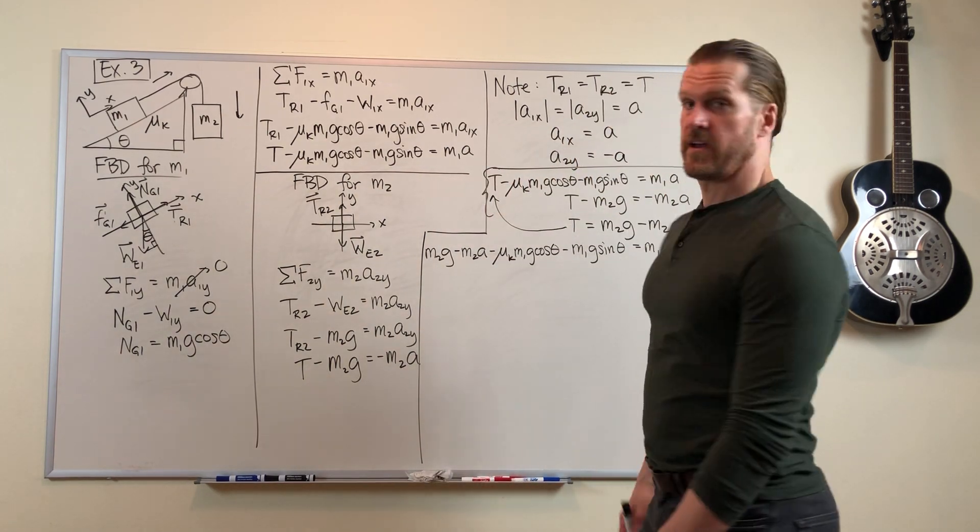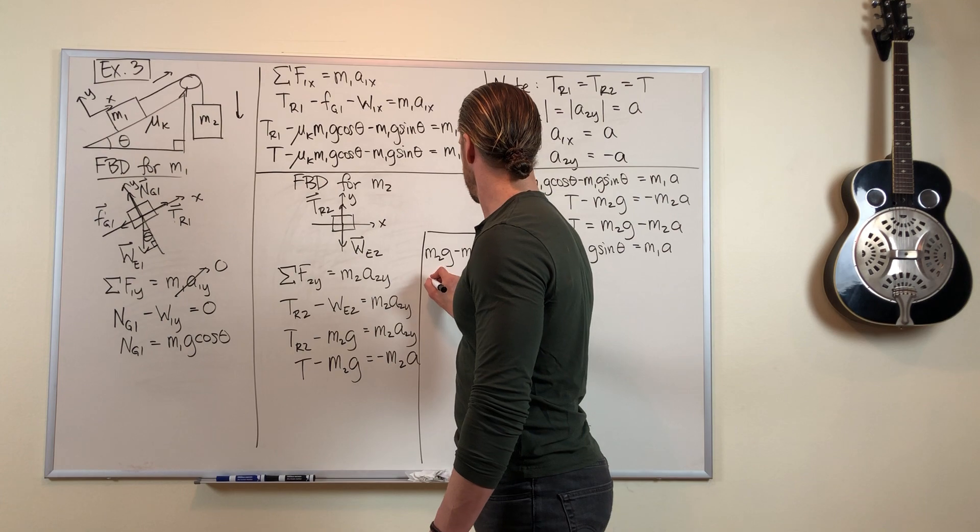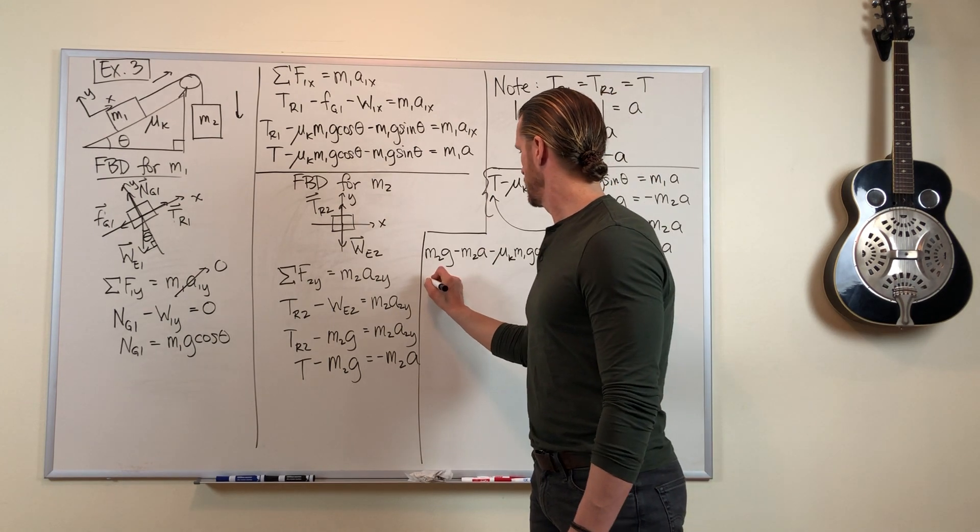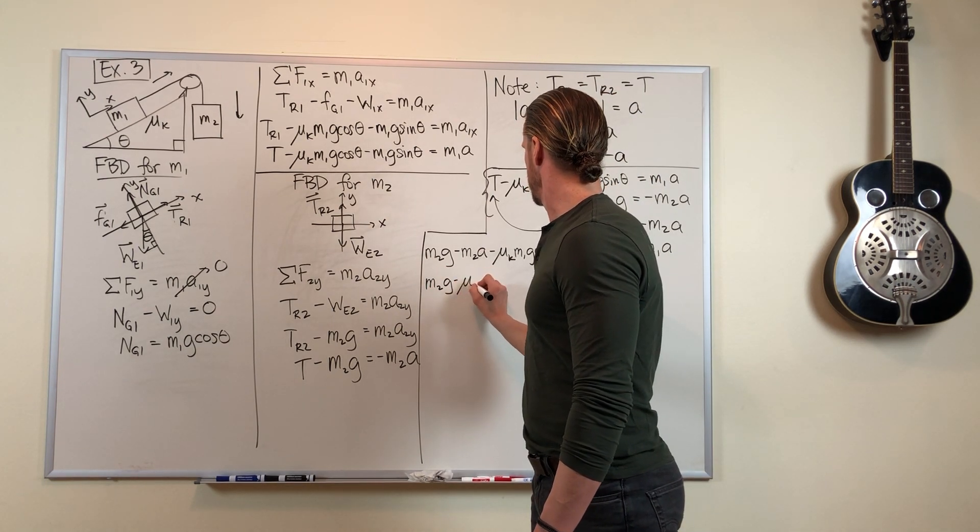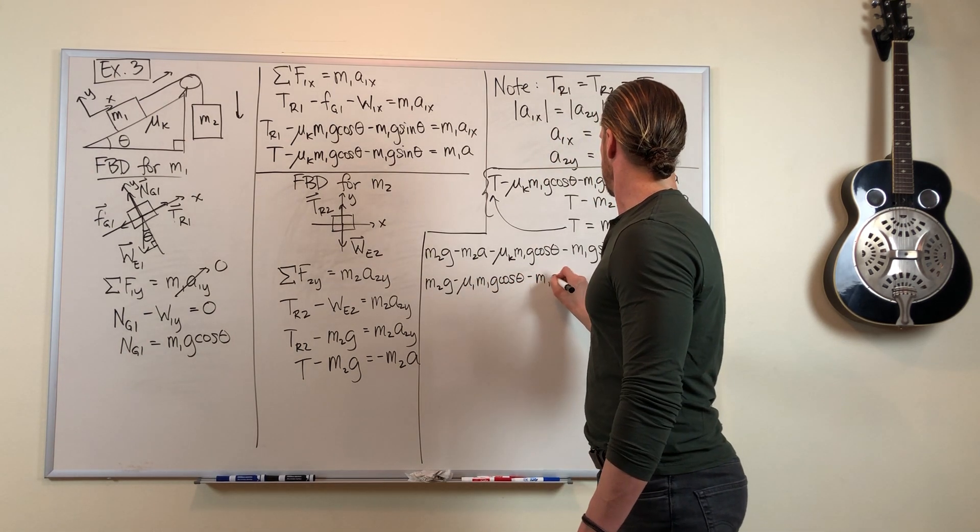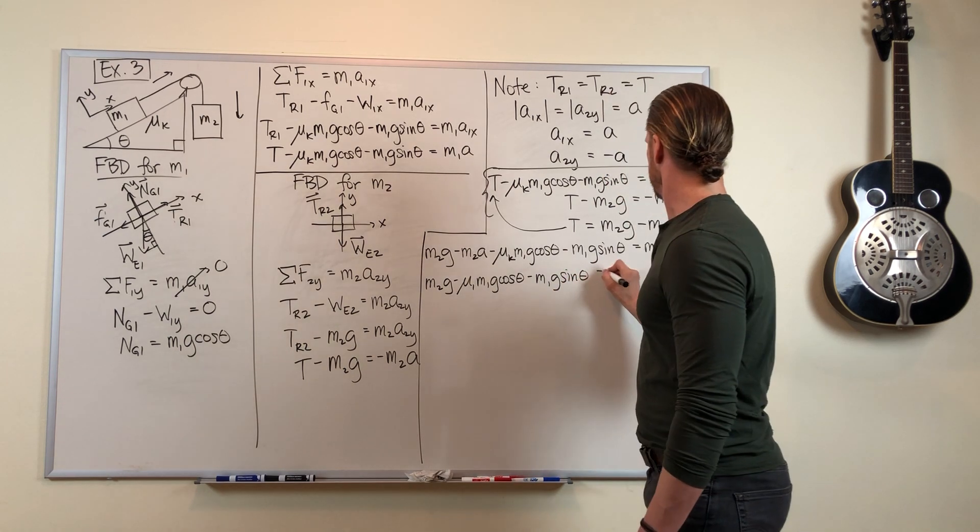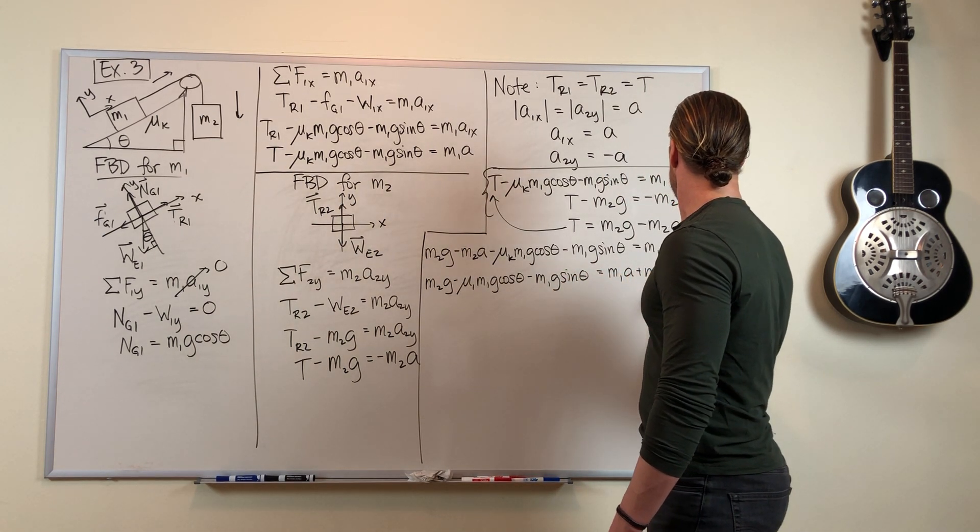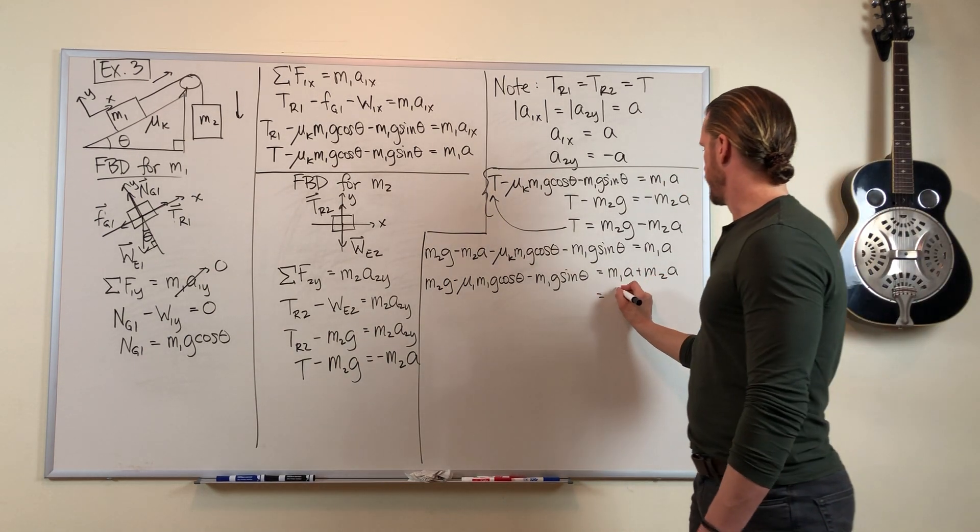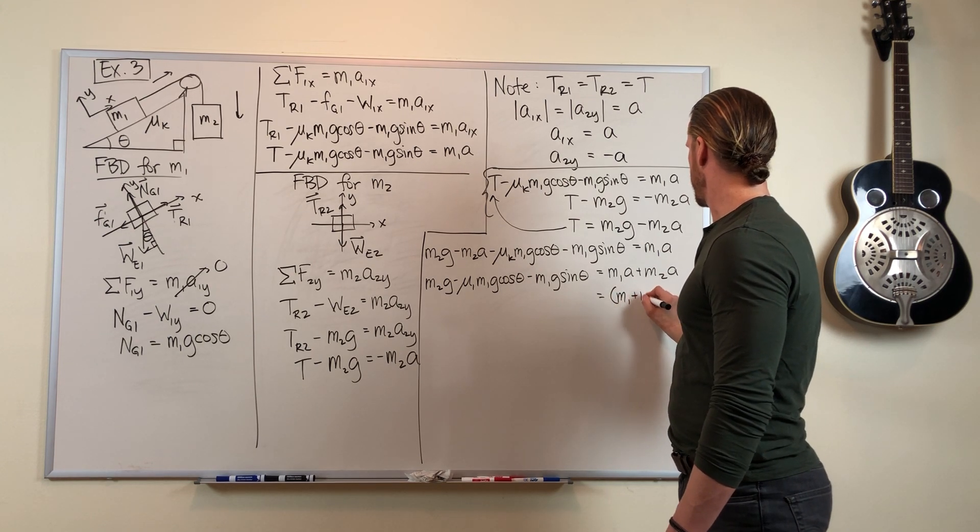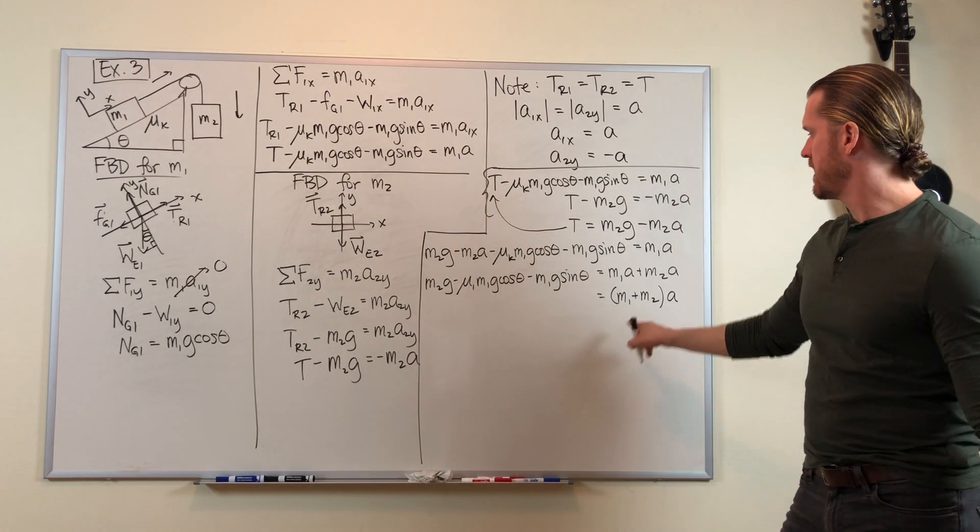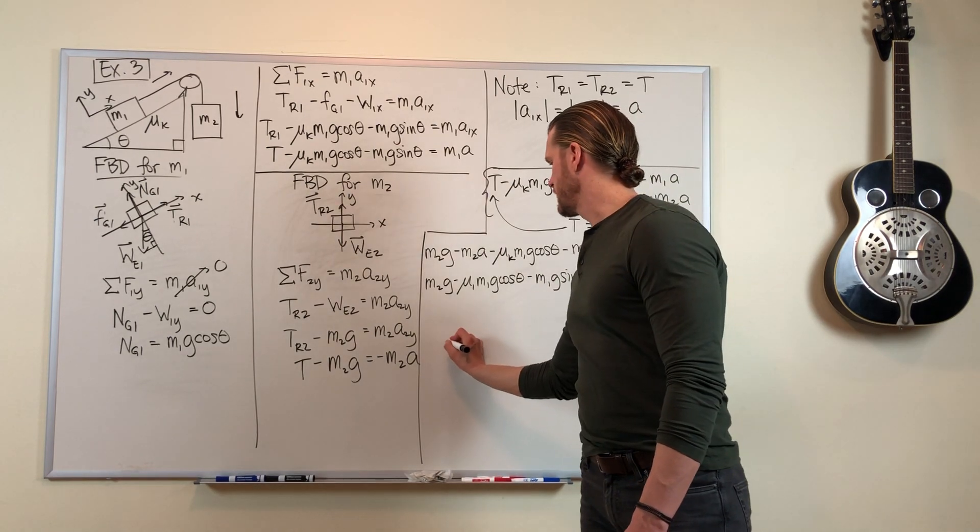Now we have a few steps of algebra and we'll be done. I'm going to move this m2a over to the right side of the equation. And notice I can simplify the right-hand side of the equation. And finally I can divide both sides by m1 plus m2, and I can get this result.